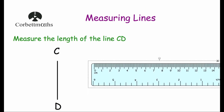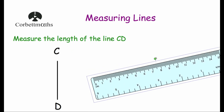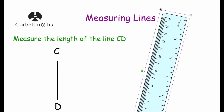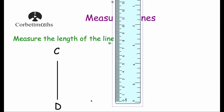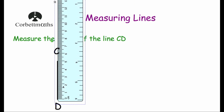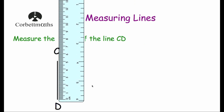Next question. We've been asked to measure the length of the line CD, and that's a vertical line. So I'm going to need to turn my ruler around so that it's vertical, and put the zero at the bottom of the line, lining it up. As you can see, if it starts at zero it reaches 5 centimetres, so the length of that line is 5cm.